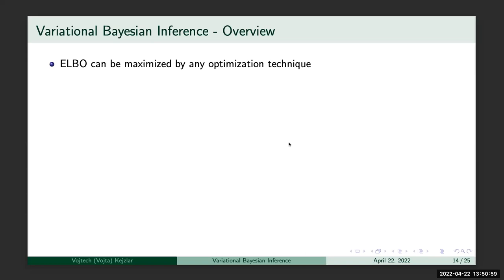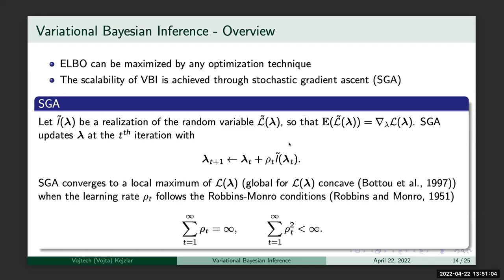So far, variational inference would not be really any faster than MCMC. But the speedup really comes through what's called stochastic optimization, or stochastic gradient ascent. The idea is that stochastic gradient ascent works exactly the same as standard gradient ascent, but I don't need to compute the full gradient. I can compute just a noisy estimate of the gradient based on some subset of my data points — instead of computing likelihood for 10 million data points, I can compute it for just 10.